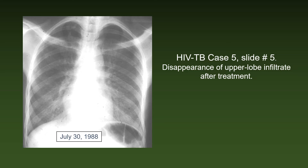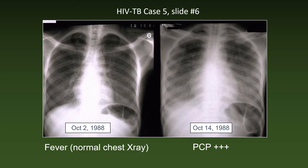After four months of anti-TB treatment, the upper lobe infiltrate had almost disappeared. A few months later, however, his fever came back. His chest X-ray was normal, but when it was repeated because of increasing dyspnea a couple of weeks later, there was a diffuse reticulonodular infiltrate. Bronchoscopy showed abundant Pneumocystis carinii.